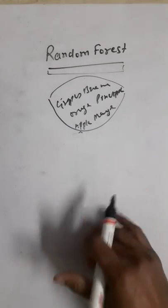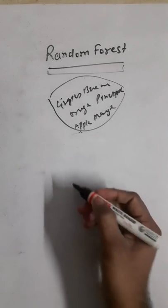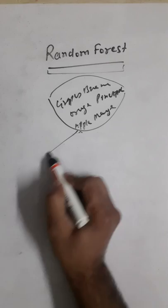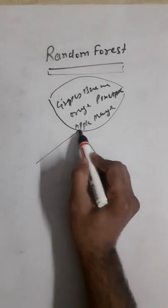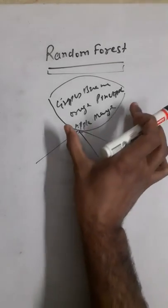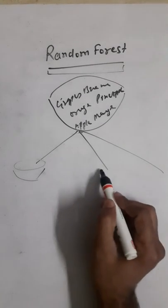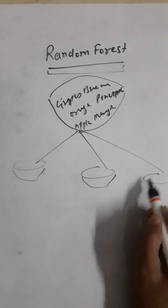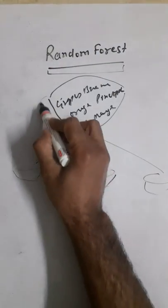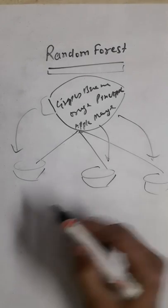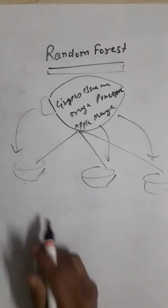We want to use the concept of Random Forest to solve this problem - to predict what kind of particular fruit it is. How will we solve this? We will divide this dataset into smaller datasets. We will give smaller baskets and pick some random fruits from here and put them in these baskets in a similar way for all three baskets.